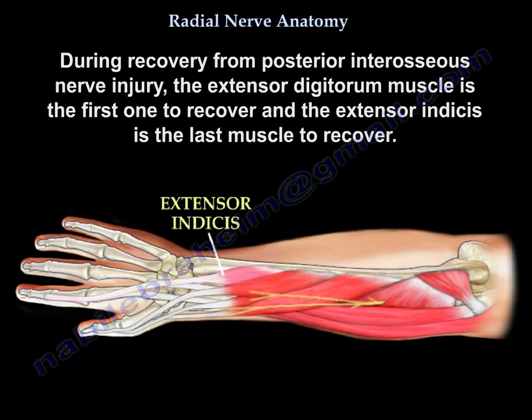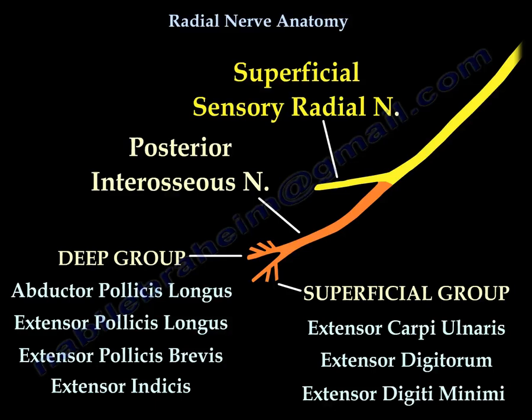This diagram shows the two divisions of the radial nerve — the superficial sensory radial nerve and the posterior interosseous nerve — and the group of muscles innervated by the posterior interosseous nerve, including both the superficial group and the deep group.